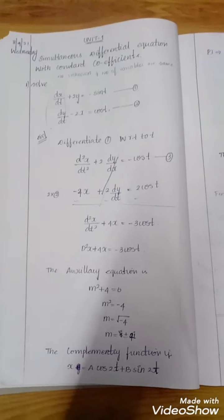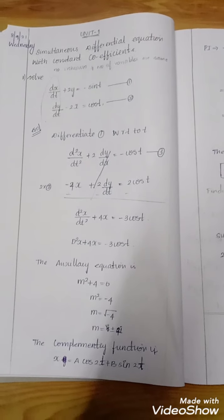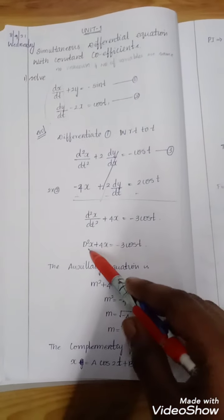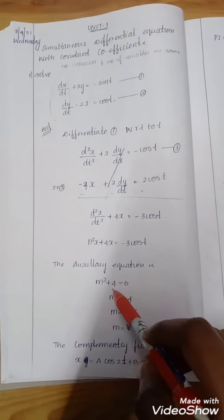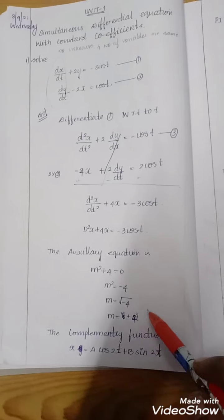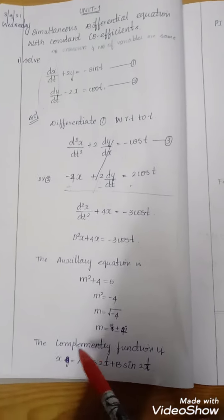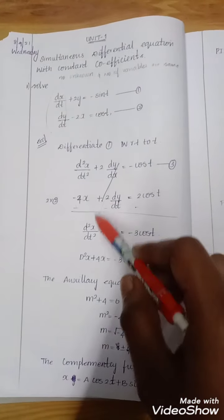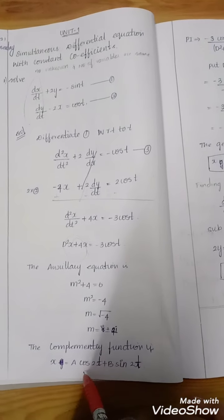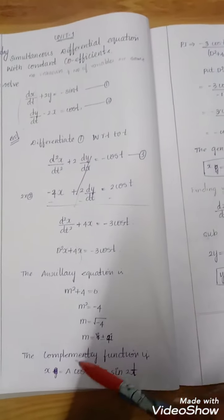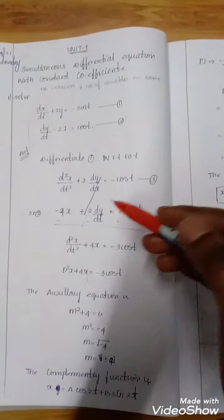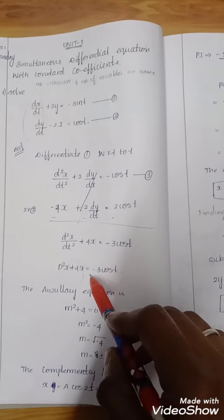Using the normal method, we find the auxiliary equation and complementary function. The auxiliary equation is m² + 4 = 0, giving m² = -4, so m = ±2i. The complementary function for x is: x = A·cos(2t) + B·sin(2t). We then find the particular integral.